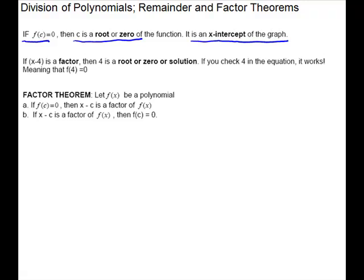We have some terms that are interchangeable. They have the same meanings. So if f of c equals 0, this means that c is a root or a 0 of the function. It is an x-intercept on the graph.